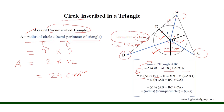Similarly, we can get the area of triangle BOC and the area of triangle COA. And if we take the sum, we can derive the formula which states that the area of the circumscribed triangle equals the radius of the inscribed circle multiplied by the semi-perimeter of the circumscribed triangle.